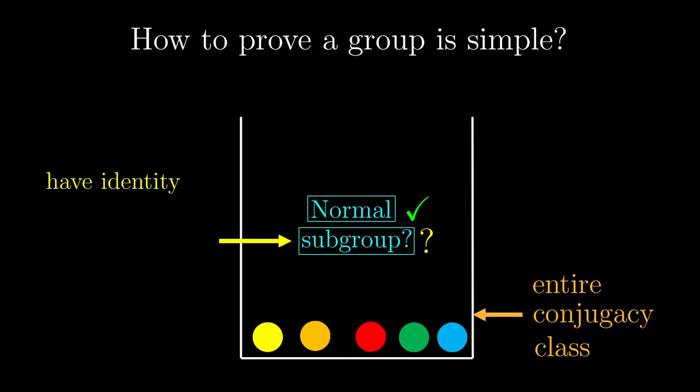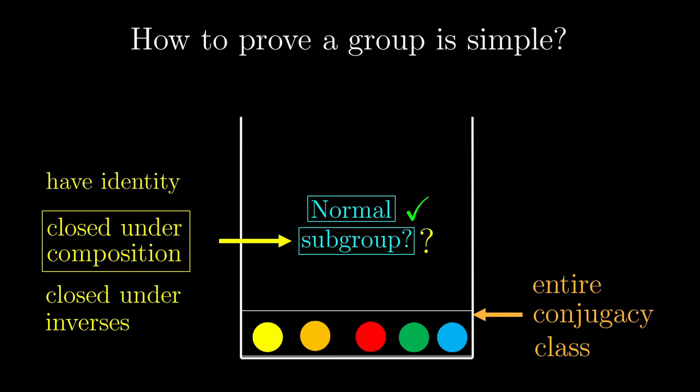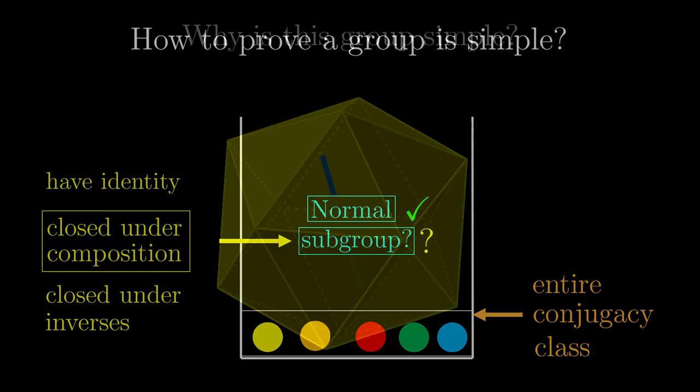Now remember that in Lagrange's theorem video, a subgroup has to have the identity in it? Any compositions of symmetries in the subgroup has to still be in the subgroup, and the inverses of symmetries in the subgroup still lie in the subgroup. It's tempting to focus on the second criterion and start composing these symmetries and see what other symmetries we have to chuck in.